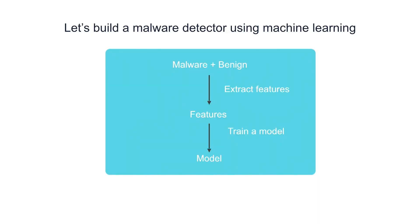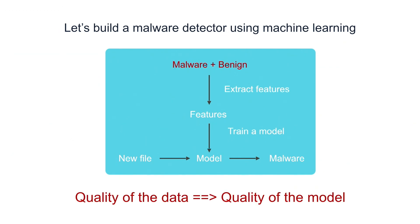So let's try to build a malware detector using machine learning. Like any other machine learning system, you will start with a labeled dataset of malware and benign content, extract features, and then train a model. Once we have a model, we can use it to detect any new file. The quality of the model depends on the quality of the data, but getting a good labeled data source for malware is very difficult.